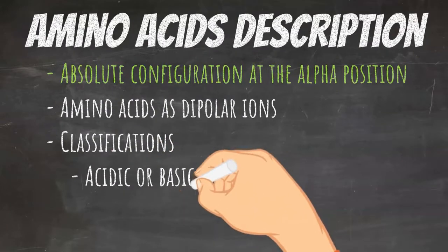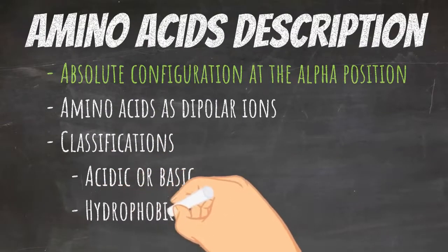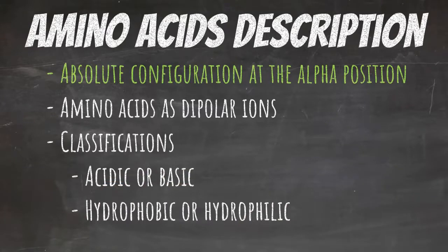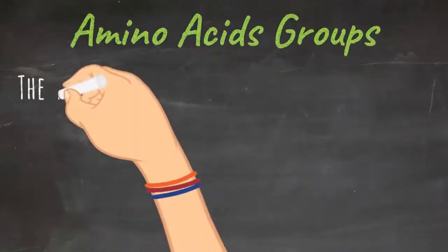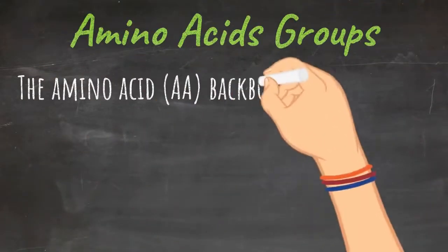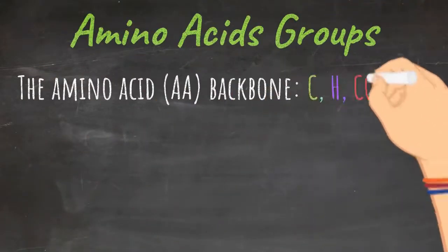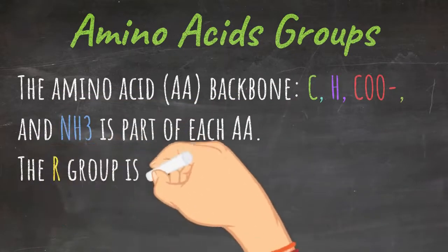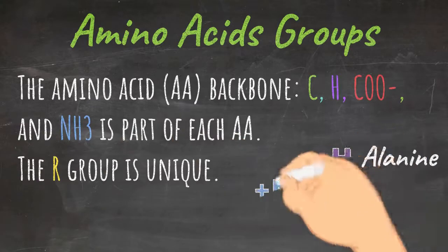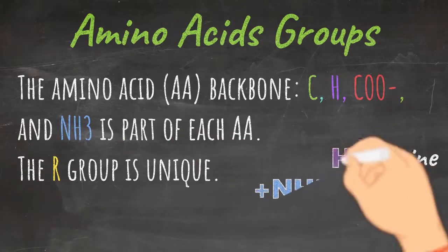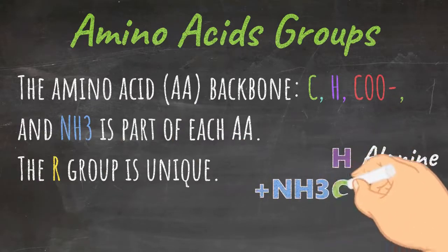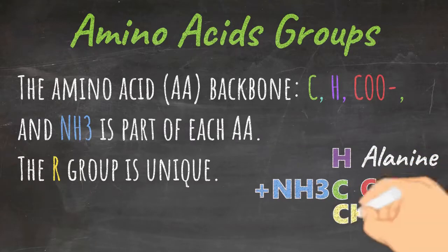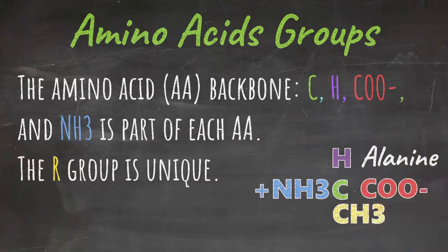Each amino acid is composed of five groups. In the amino acid backbone there is an alpha carbon shown in green, a hydrogen shown in purple, a carboxylic acid shown in red, and an amino group shown in blue. Each of these are part of every amino acid.